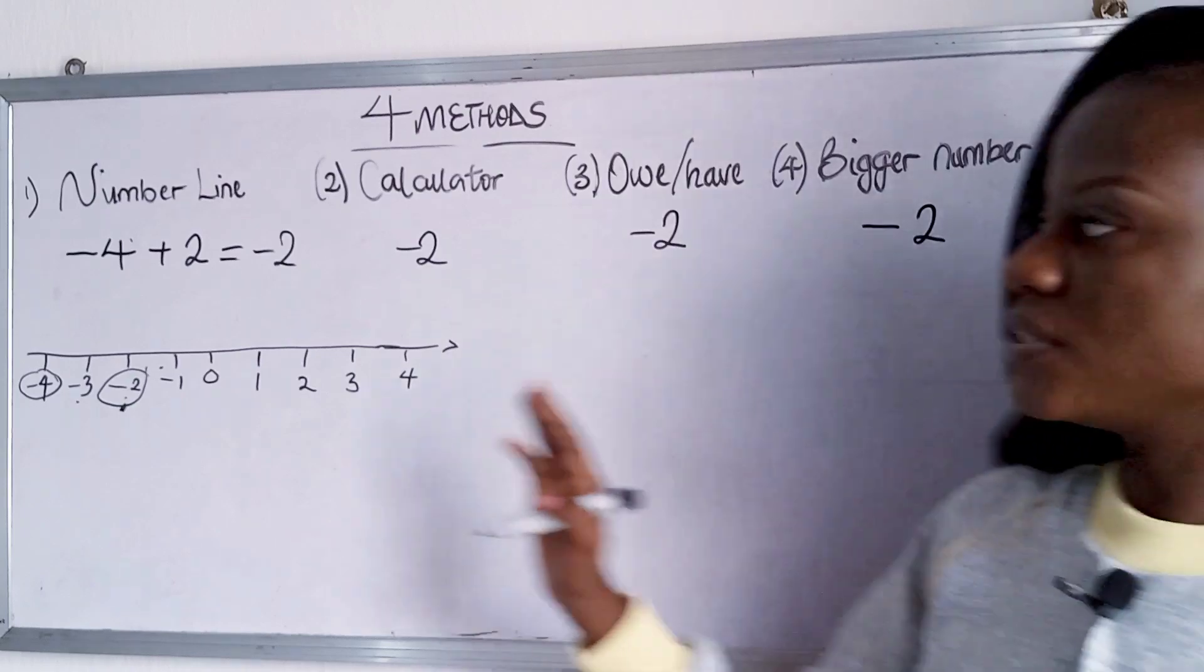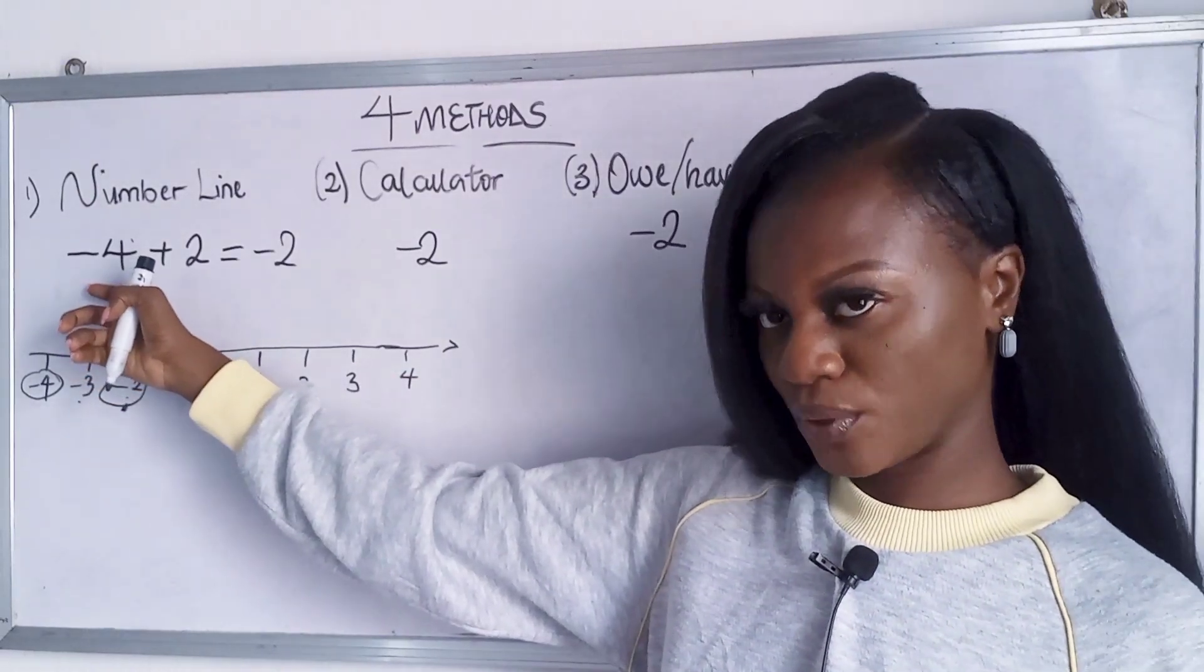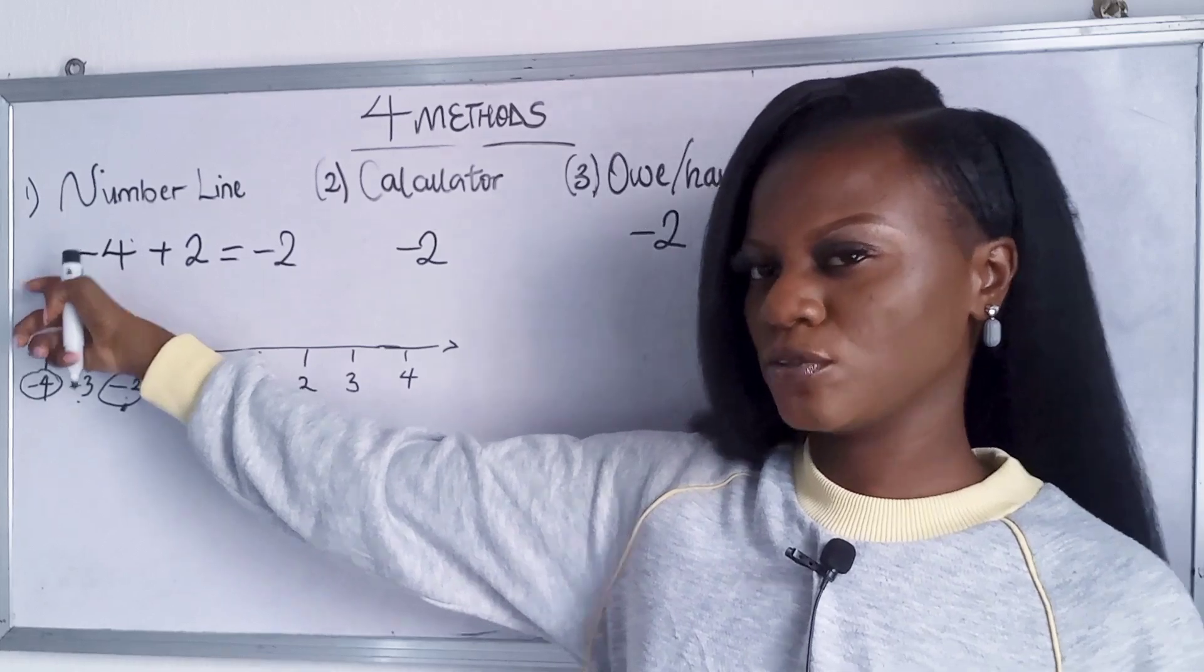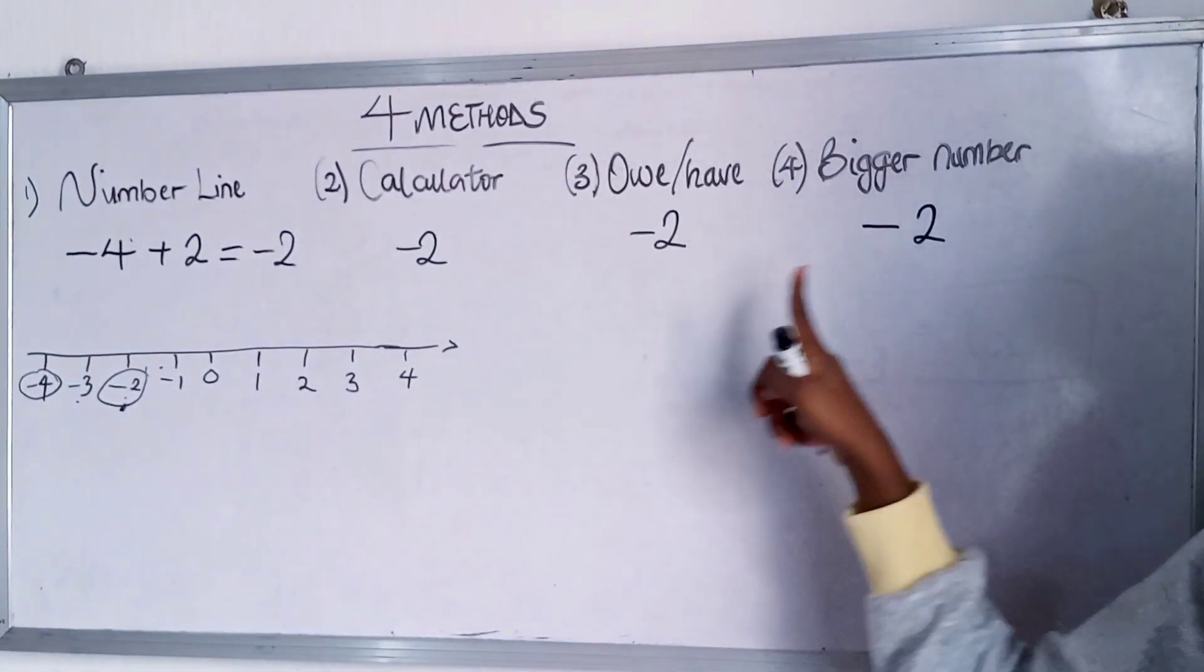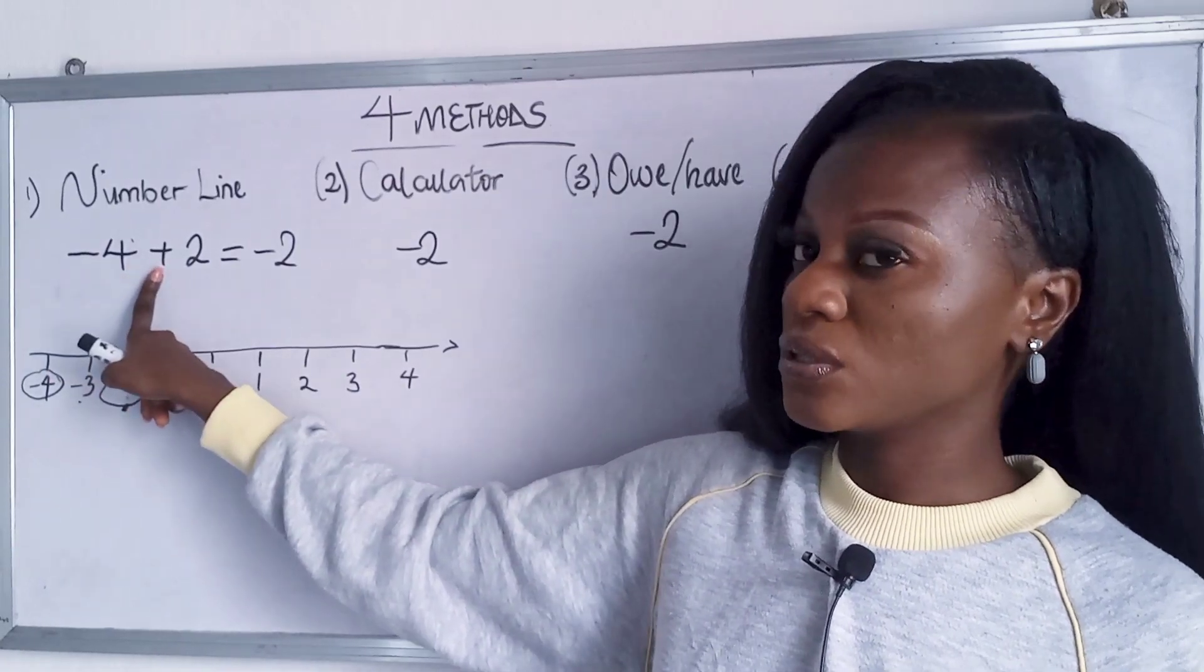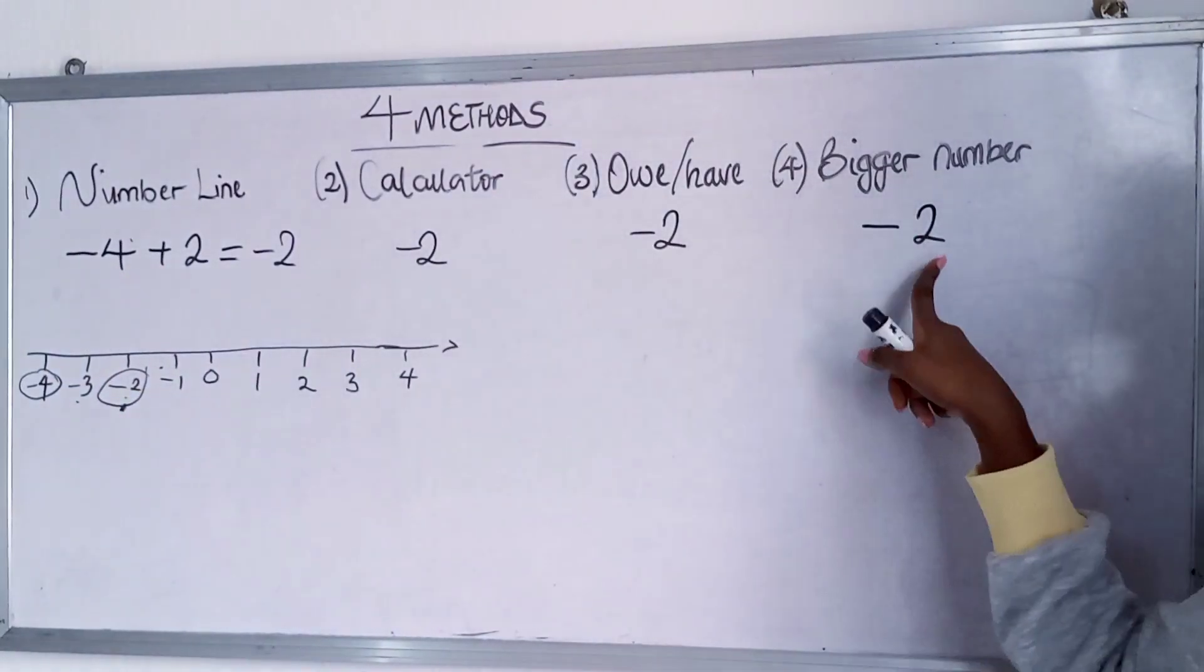You have the bigger number which is four. And then you know the sign in front of the bigger number is minus. So you first write your minus and then you multiply your signs which is what? Minus. So you subtract to get this.